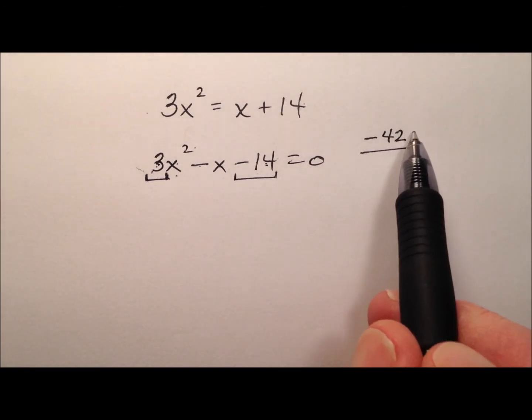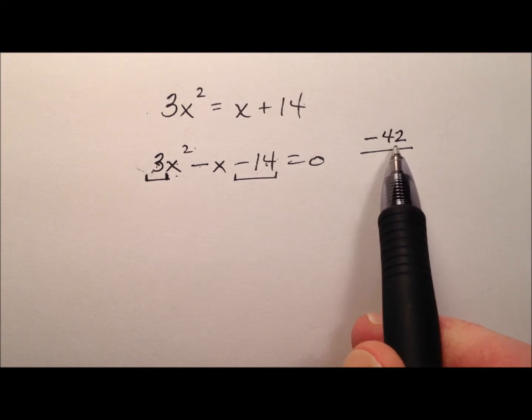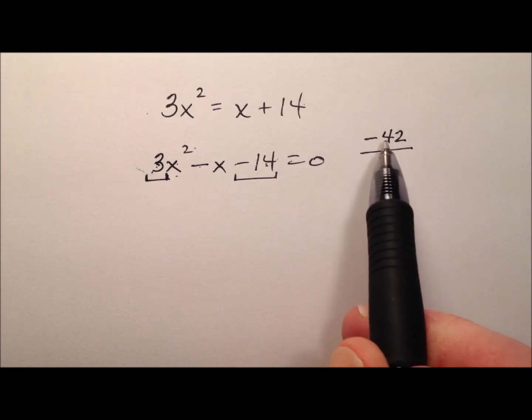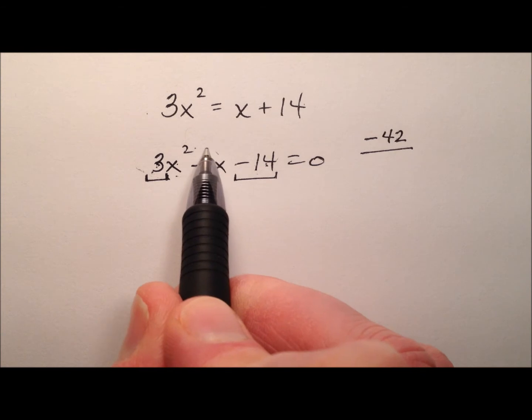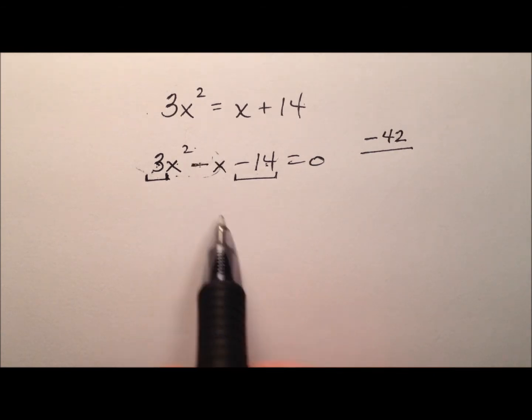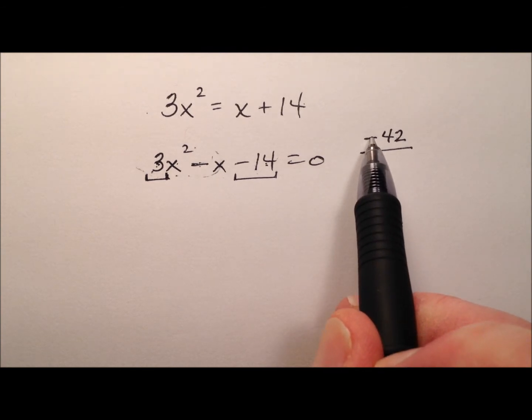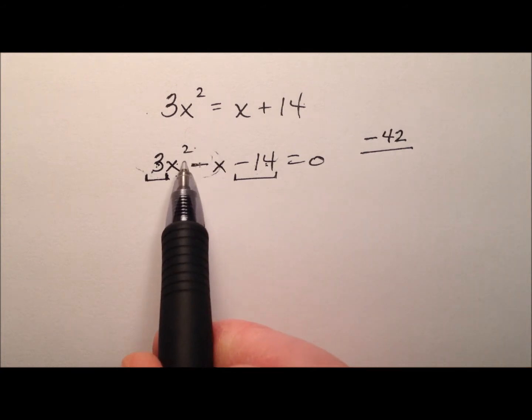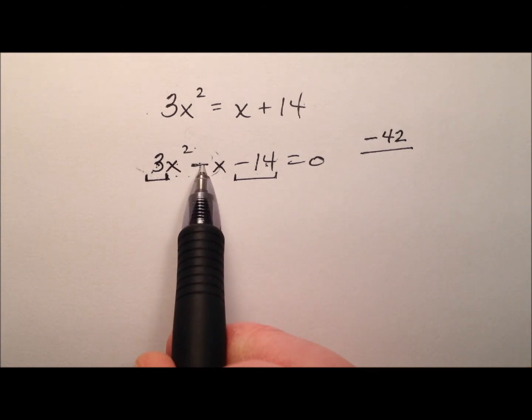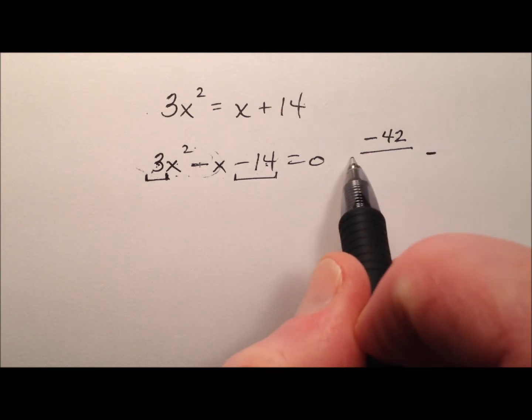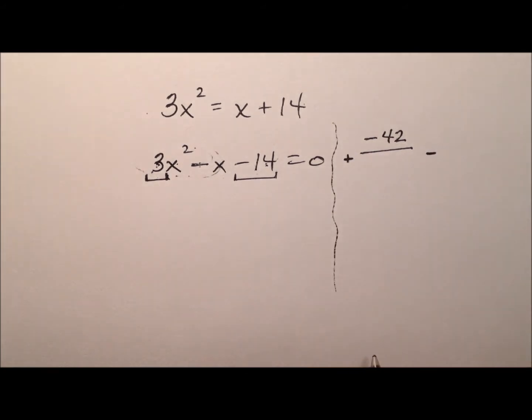So I'm looking for factor pairs, two numbers that multiply to make negative 42 that will add to make the coefficient of this linear term, which is negative 1. We know it's going to multiply to make a negative, so one of them is negative, one of them is positive. It adds to make a negative, so we know the larger one is negative.